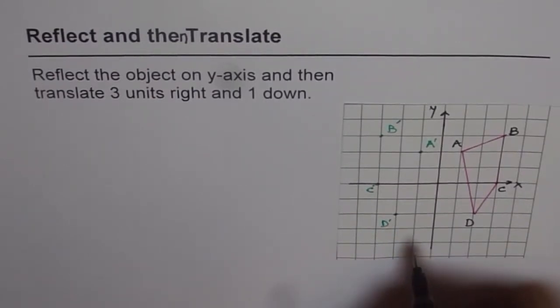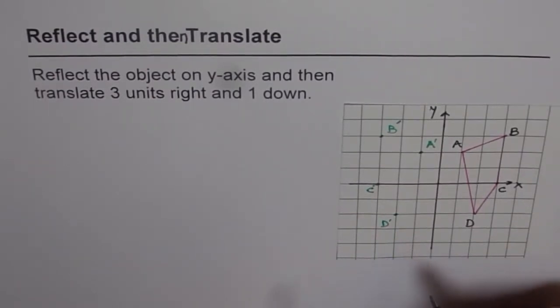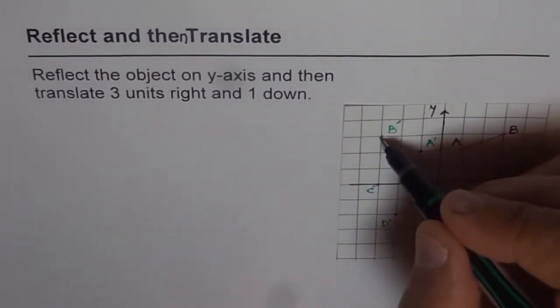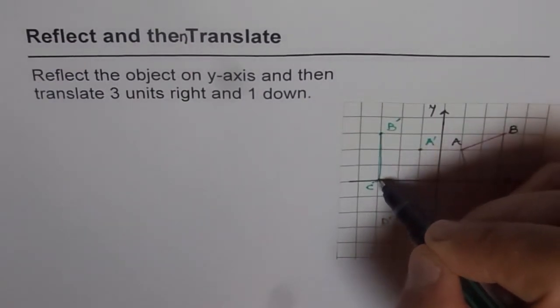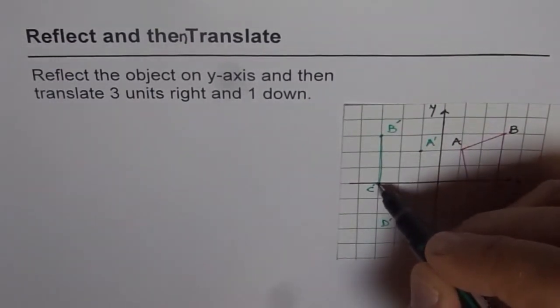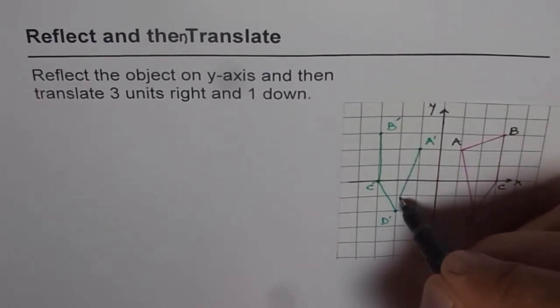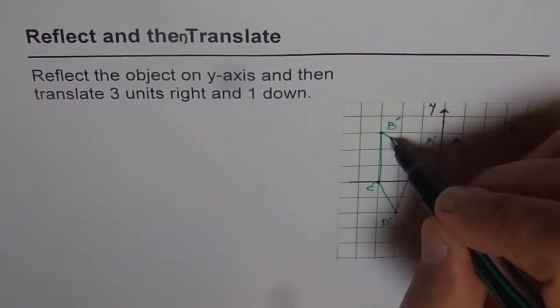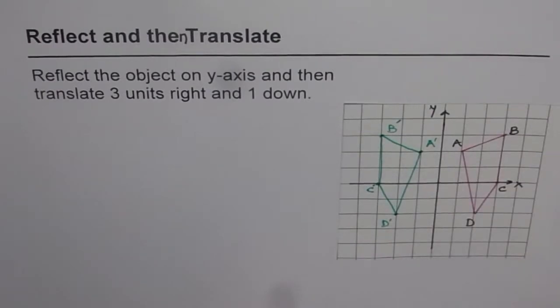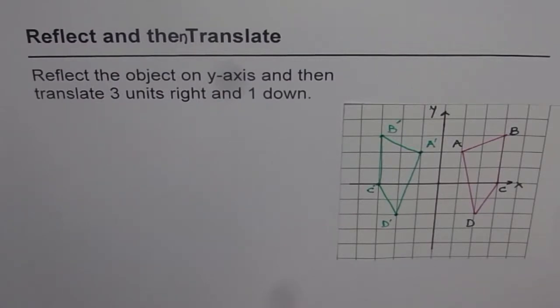Now we can join these points to form the quadrilateral after reflection on y-axis. So I am just joining them. So we have this quadrilateral here. So A dash, B dash, C dash, and D dash is the quadrilateral after reflection on y-axis.